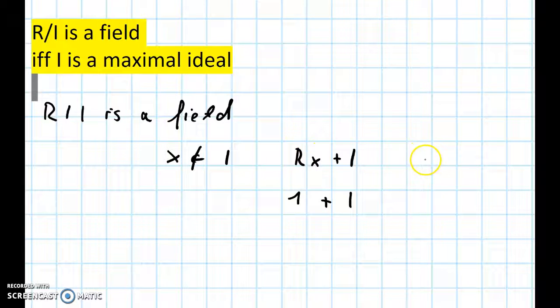We can write x inverse times x plus I is the same as 1 plus I. So 1 plus I is an element of this factor ring, and this means that this ideal is indeed already all of R.